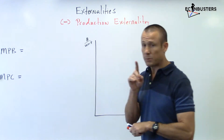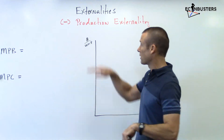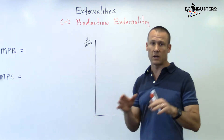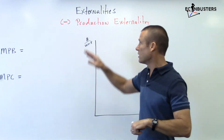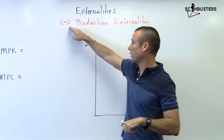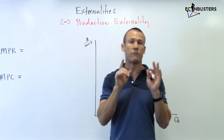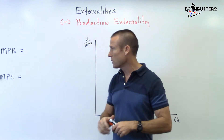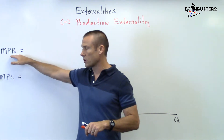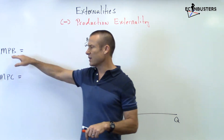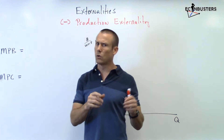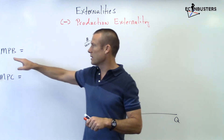Both of those were examples of externalities — situations where third parties are being either benefited or hurt from the production or consumption of the good. For this particular video, we're going to get all the way to negative production externalities. But before we do that, we've got some terms to go over — kind of new terms, kind of old terms.